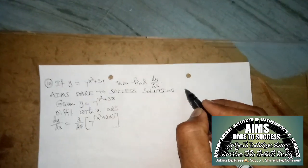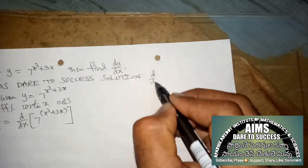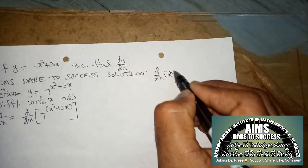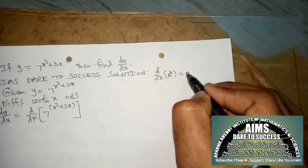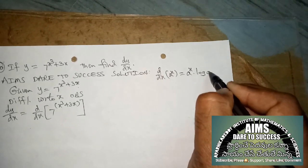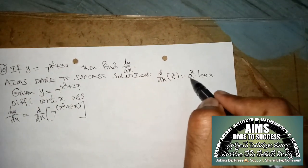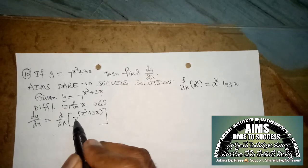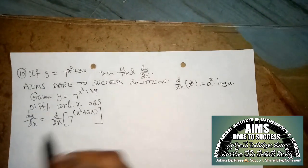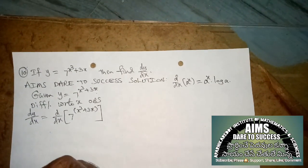This is in the form of d by dx of a^x, which equals a^x into log(a). Here, a value is 7 and x value is x³ + 3x.